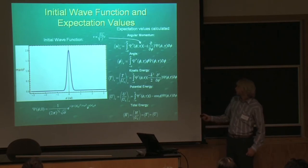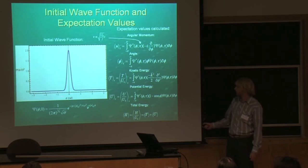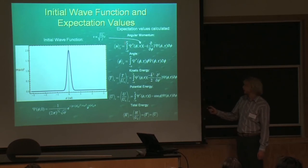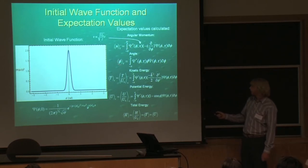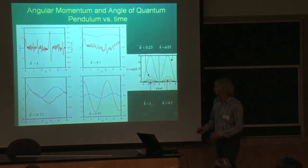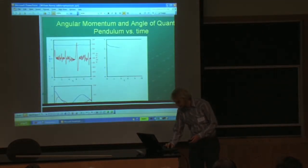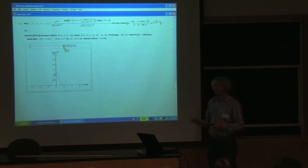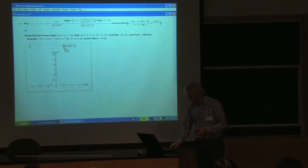This shows the initial wave function — the initial state of the vector versus the angle — spread out across the two-pi range. It's a Gaussian; it's not a strict one spot. You can see it's centered at zero. The expectation values we want to calculate include angular momentum, the angle, dimensionless kinetic energy, dimensionless potential energy, and dimensionless total energy. Before talking about the slide, I'll show a quick mathematical animation: the initial state has the pendulum in its Gaussian, a little bit spread out over an angle centered at zero. This is a slightly different case — it doesn't have the effects of gravitational potential energy; it's just a free pendulum to whirl about.